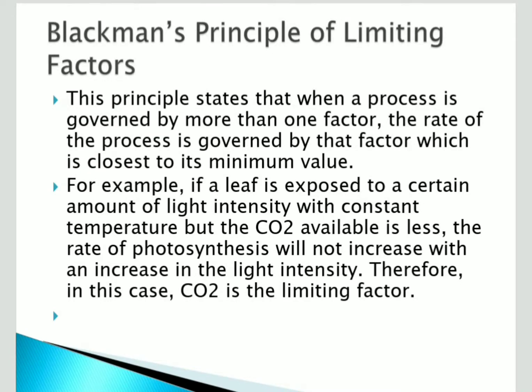The next concept is Blackman's Principle of Limiting Factors. This principle states that when a process is governed by more than one factor, the rate of the process is governed by the factor which is closest to its minimum level. For example, if a leaf is exposed to a certain light intensity with constant temperature but carbon dioxide is less, the rate of photosynthesis will not increase with more light — therefore CO2 is the limiting factor. Thank you for watching, please subscribe to my channel.